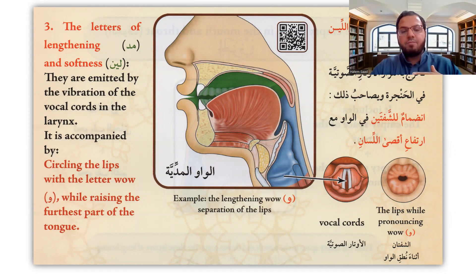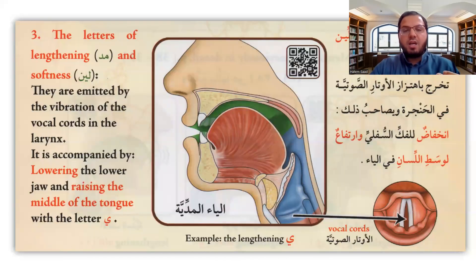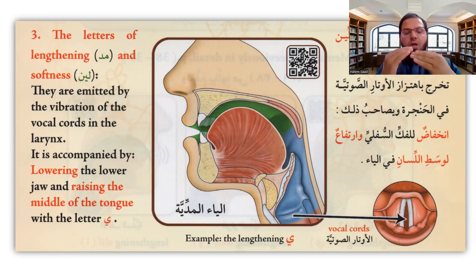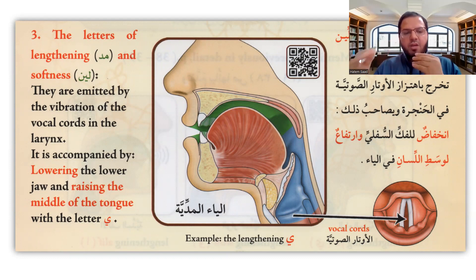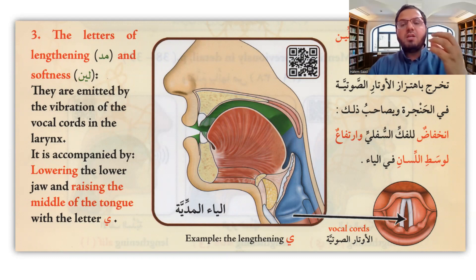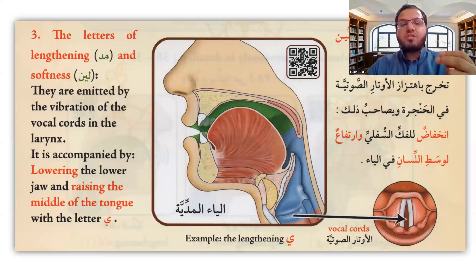We say 'waw.' For the third type, the letters of lengthening and softness — they are emitted by vibration, as mentioned for mad and lean. But this time we lower the jaw and raise the middle of the tongue, producing 'ya.' So by collision, by separating, and by vibrating, we make alif, waw, and ya to pronounce and lengthen the mad and softness letters.